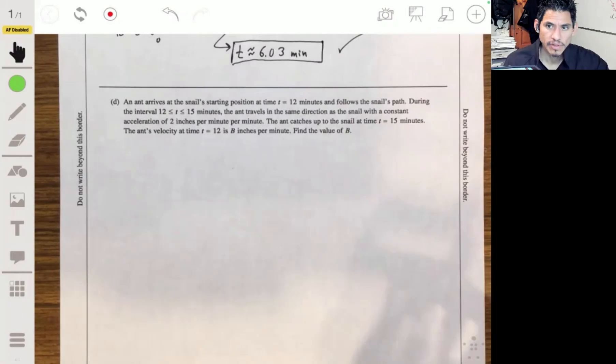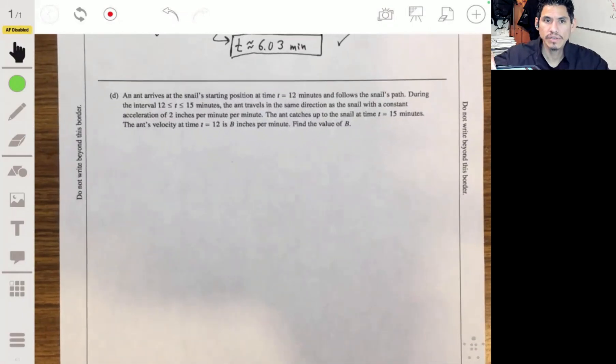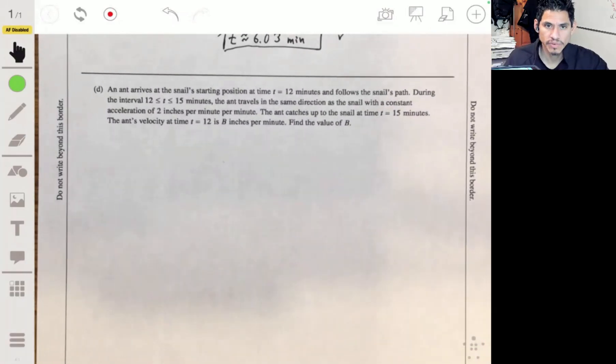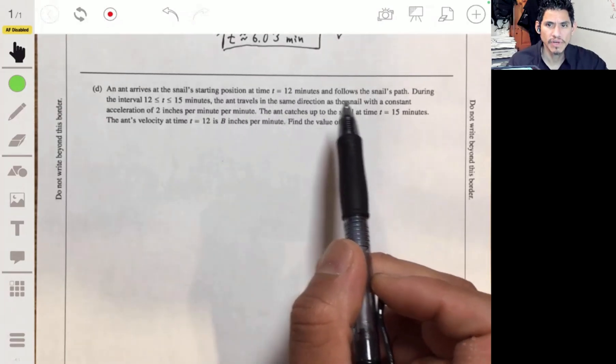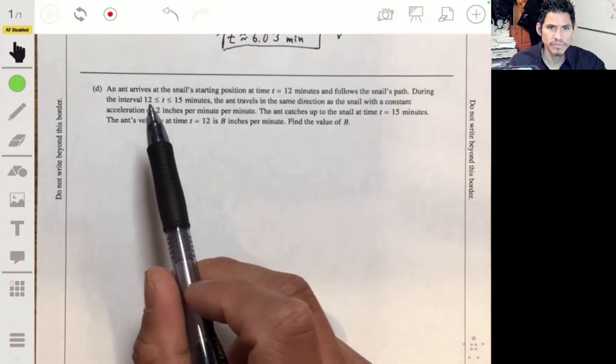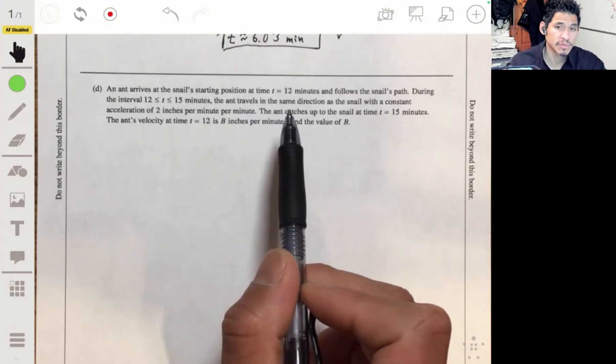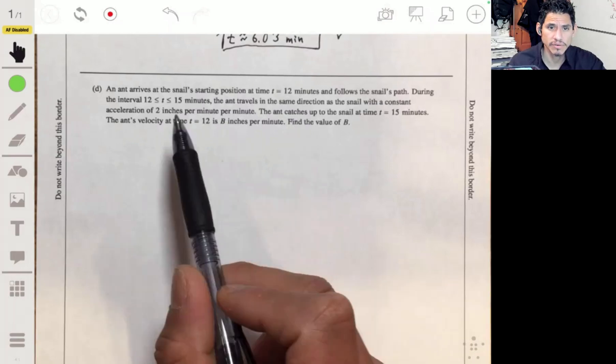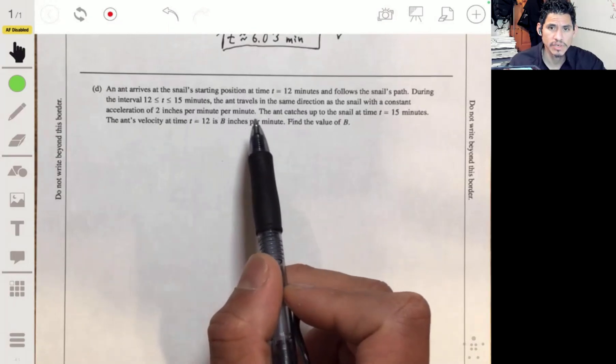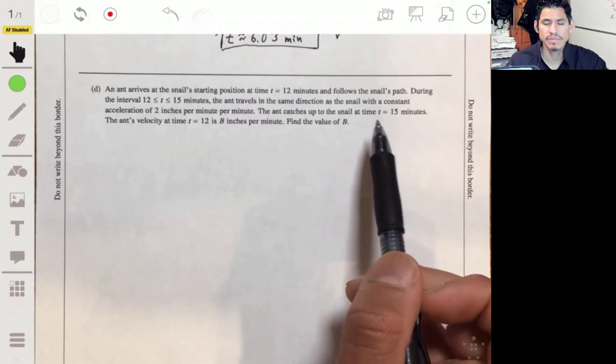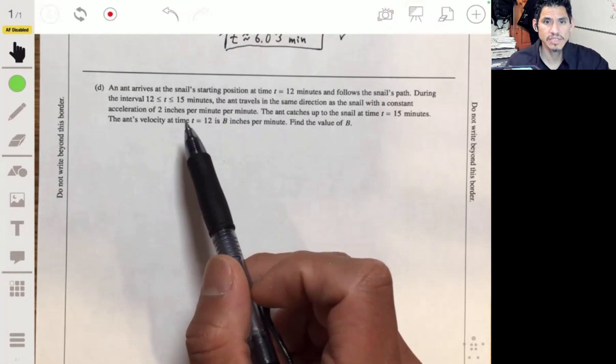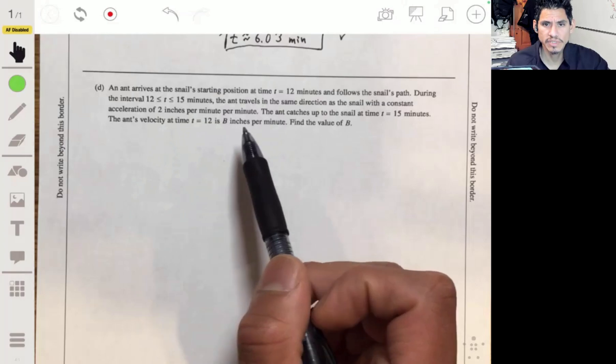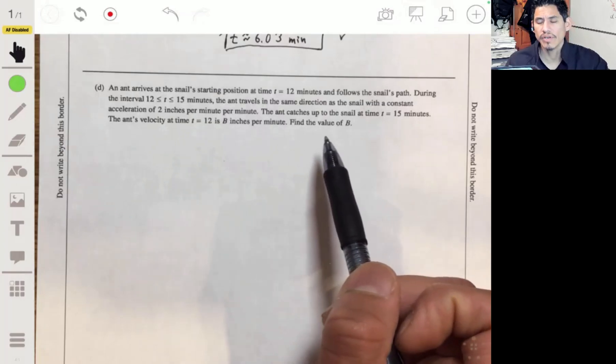All right, the last part. We have that the ant, an ant arrives at the snail's starting position at 12 minutes and follows the snail's path. During the interval from 12 to 15, the ant travels in the same direction as the snail with a constant acceleration of 2 inches per minute squared. The ant catches up to the snail at time t = 15 minutes. The ant's velocity at t = 12 is b inches per minute. Find the value of b.